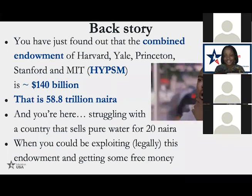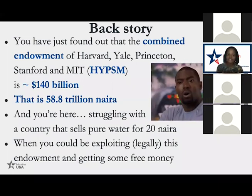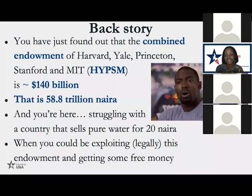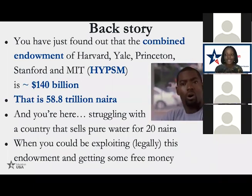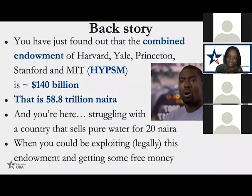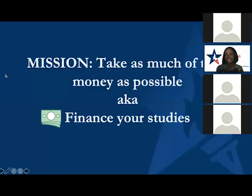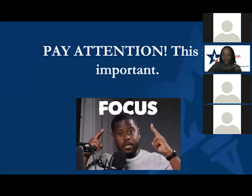I want to start with a backstory. Harvard, Yale, Princeton, Stanford, and MIT have this acronym called HYPSM, and in total the five schools have a combined endowment of 140 billion dollars — about 58.8 trillion naira. Harvard alone has about 32 billion dollars in endowments, making it the richest school in the world. The goal of this presentation is for you to leave knowing that when you're applying for financial aid, you want to take as much of their money as possible.